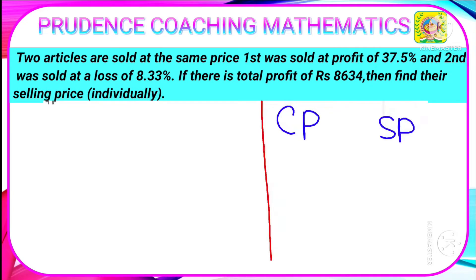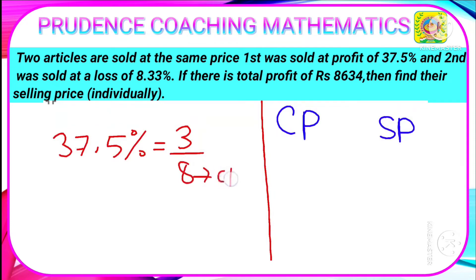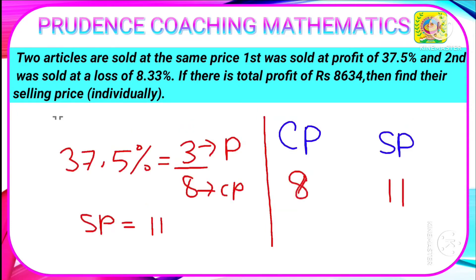According to this question, two articles are sold at the same price, meaning the selling price of both articles is the same. The first was sold at a profit of 37.5%, which equals 3/8. Here the base is CP, and since it is sold at profit, 3 is profit. So SP = CP + profit = 8 + 3 = 11. If the cost price of the first article is 8 units, then the SP will be 11 units.